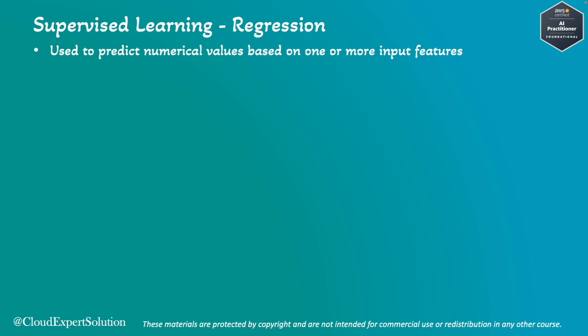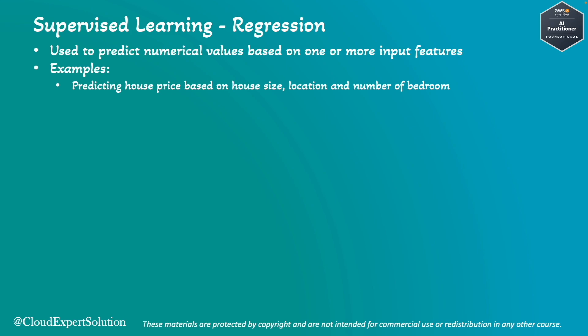Next, we'll review regression and its use cases. Unlike classification, in regression supervised learning we try to predict numerical values based on one or more input features. For example, predicting a house price based on house size, location, and number of bedrooms is an example of regression. Another example could be predicting the future price of a stock based on its historical data.